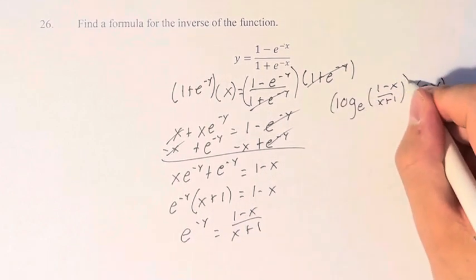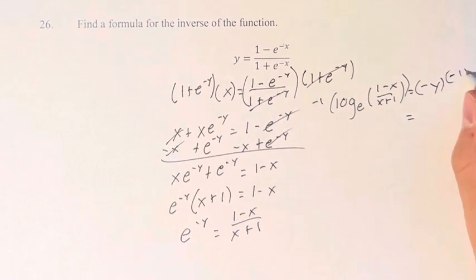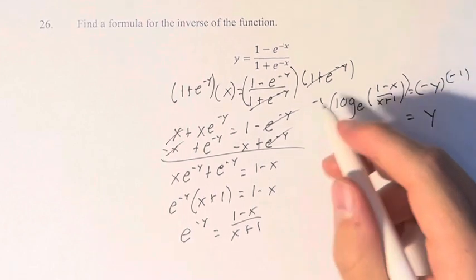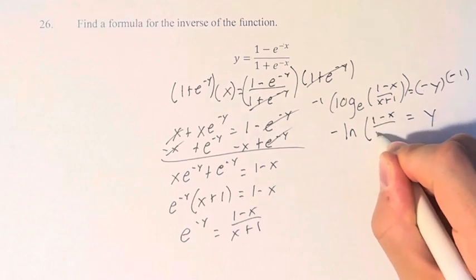And if we just multiply both sides by negative 1. Negative 1 times negative y is y. This equals negative log base e is ln of 1 minus x over x plus 1. And this is the inverse of your original function.